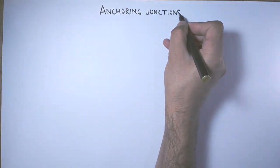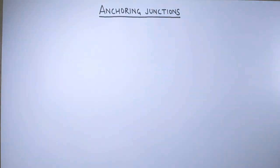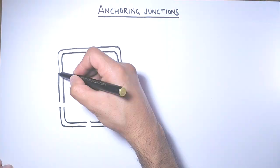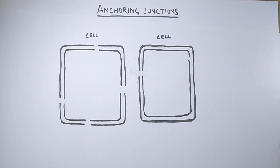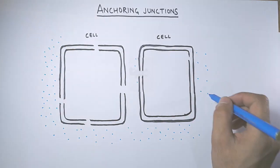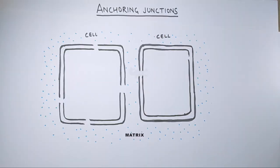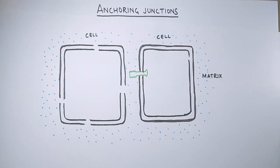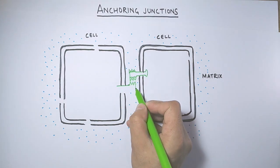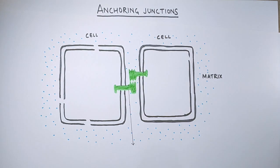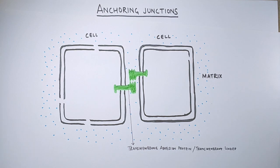In the previous video we discussed about the cell junctions and its types. Now in this video we'll be discussing about anchoring junctions in detail. Let's illustrate these junctions by drawing two cells surrounded by an extracellular matrix. The green color structure shown here, present on the surface of cells, is the linker protein of the anchoring junction — also called transmembrane adhesion protein or transmembrane linker.